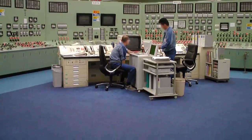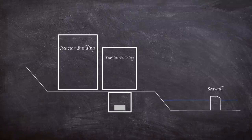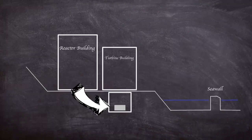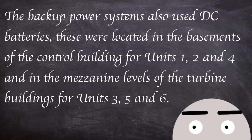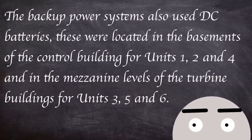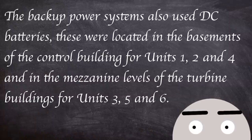Each reactor's emergency diesel generators and associated equipment were stored underneath the turbine buildings between seven to eight meters below grade. The backup power systems also used DC batteries. These were located in the basements of the control buildings for units one, two and four and in the mezzanine levels of the turbine buildings for units three, five and six.